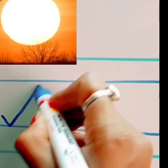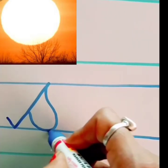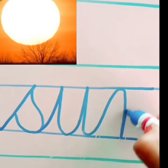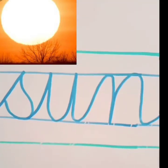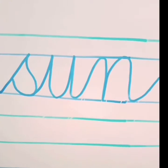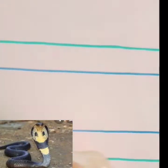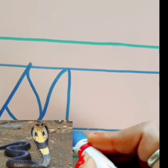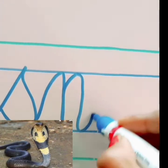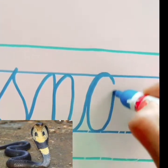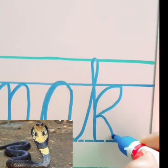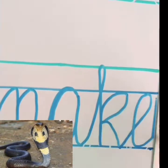S for sun. S, U, N, sun. Also S for snake. S, N, A, K, E, snake.